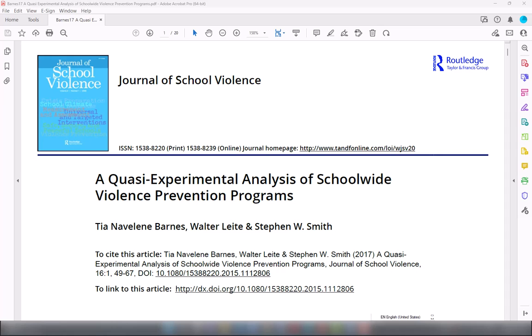Here I will demonstrate latent class analysis using an example from this article, quasi-experimental analysis of school-wide violence prevention programs. This article actually combines latent class analysis with propensity score methods but I will focus on the latent class analysis part only and I will use R to show this example.